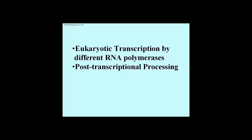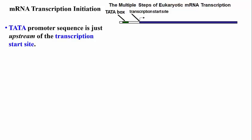Eukaryotic cells use different RNA polymerases to make different RNAs, and then process their transcripts in several ways.